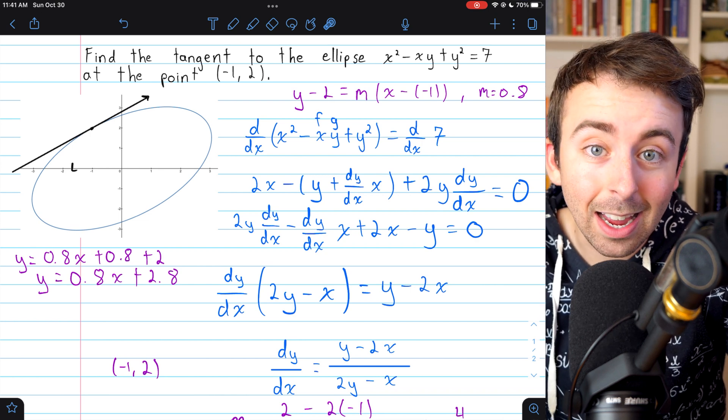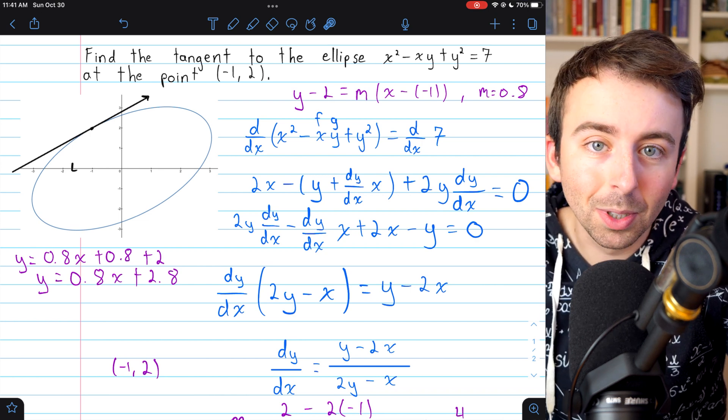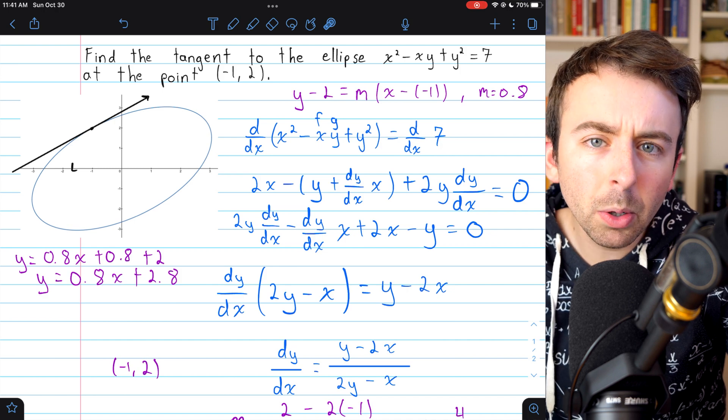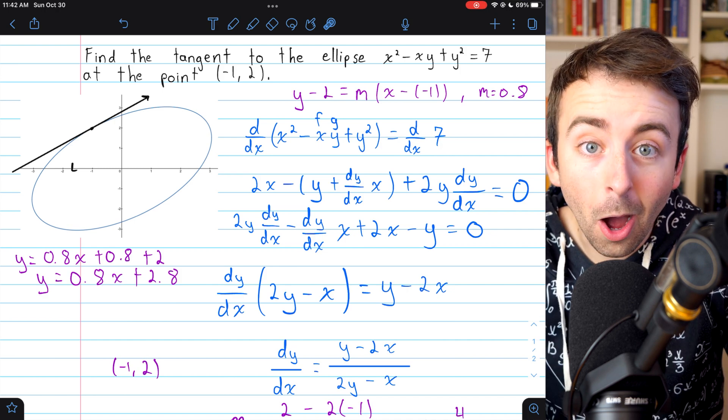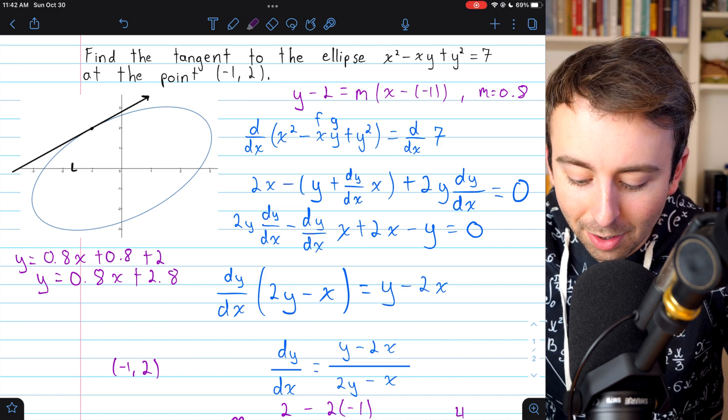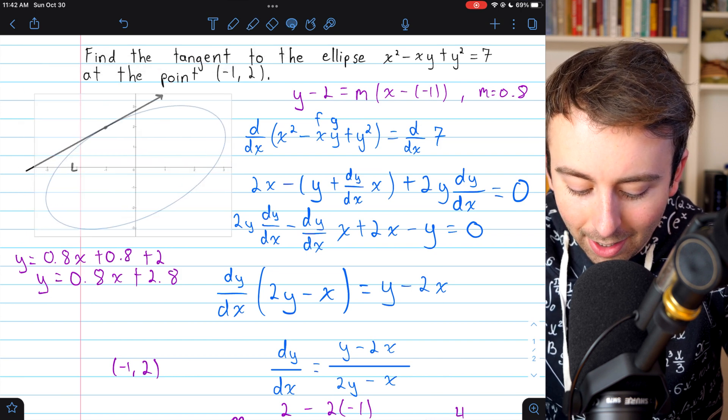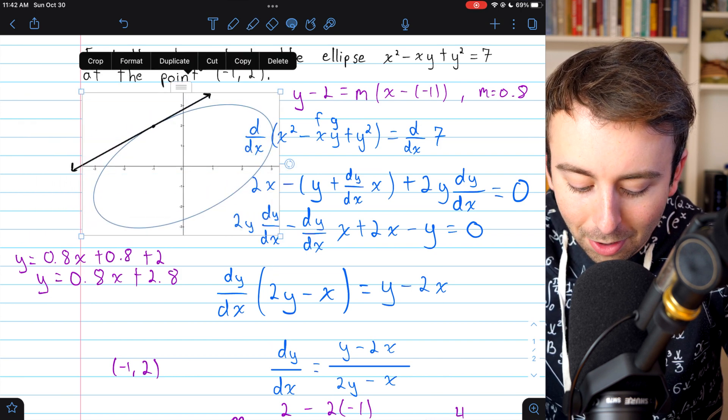That's how you find the line tangent to a curve using implicit differentiation. Let me know in the comments if you've got any questions. Oh, and sorry I accidentally moved the sketch without moving that line's arrowhead. I'll just put that back where it was supposed to go.